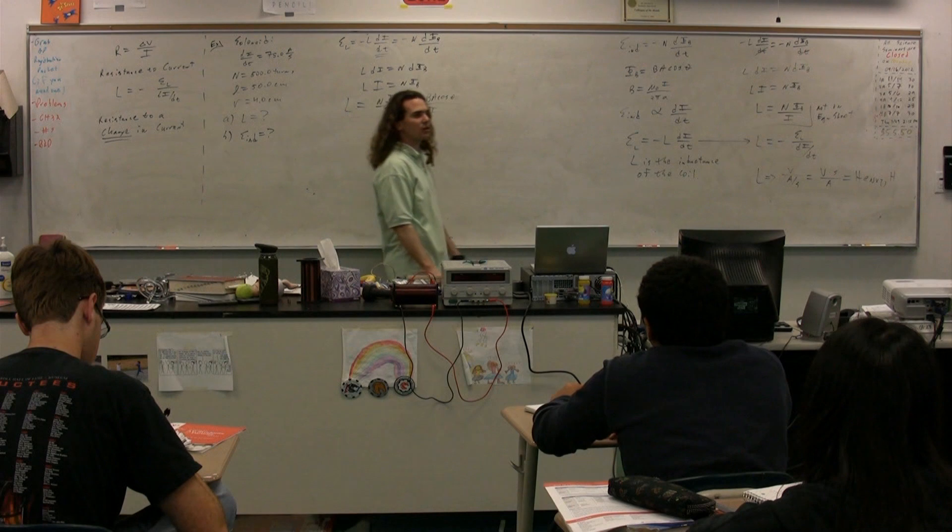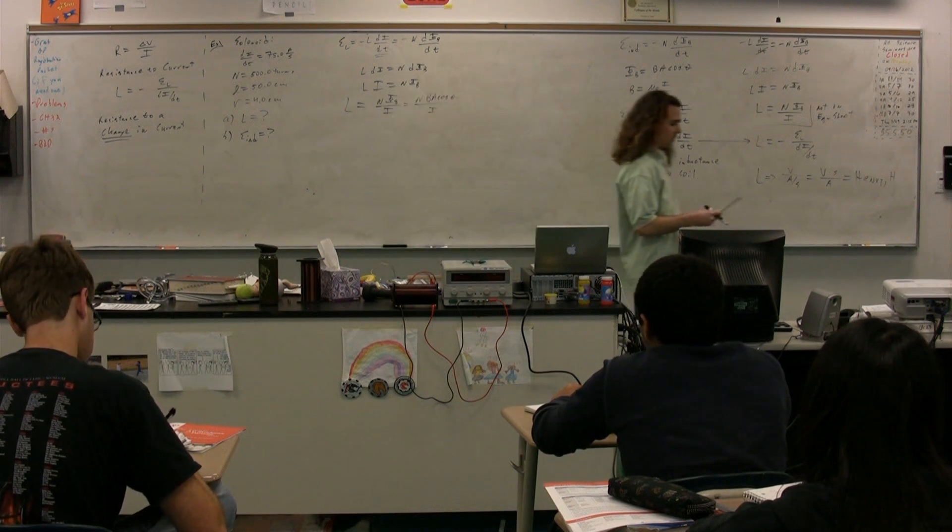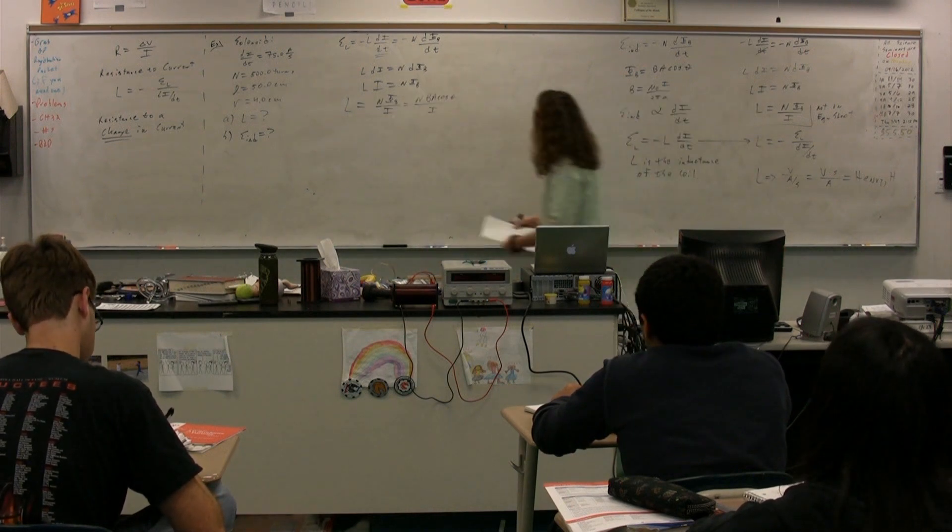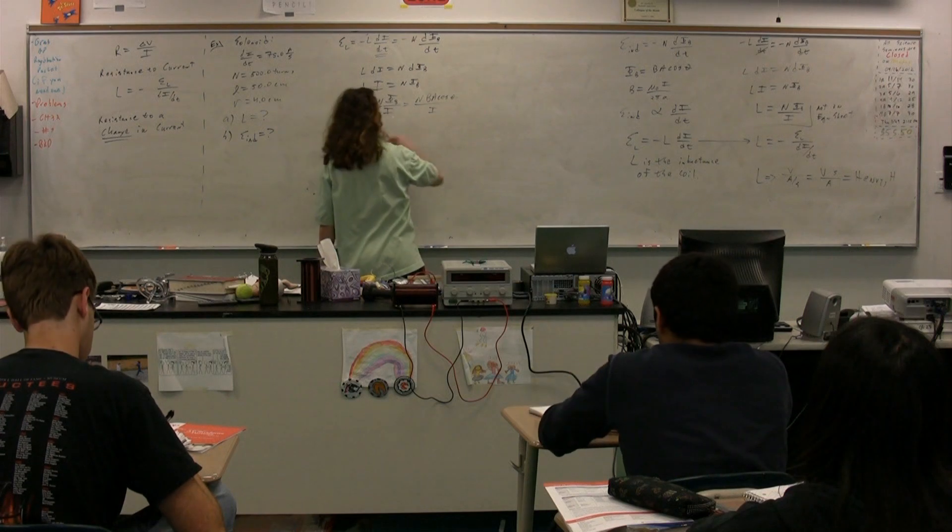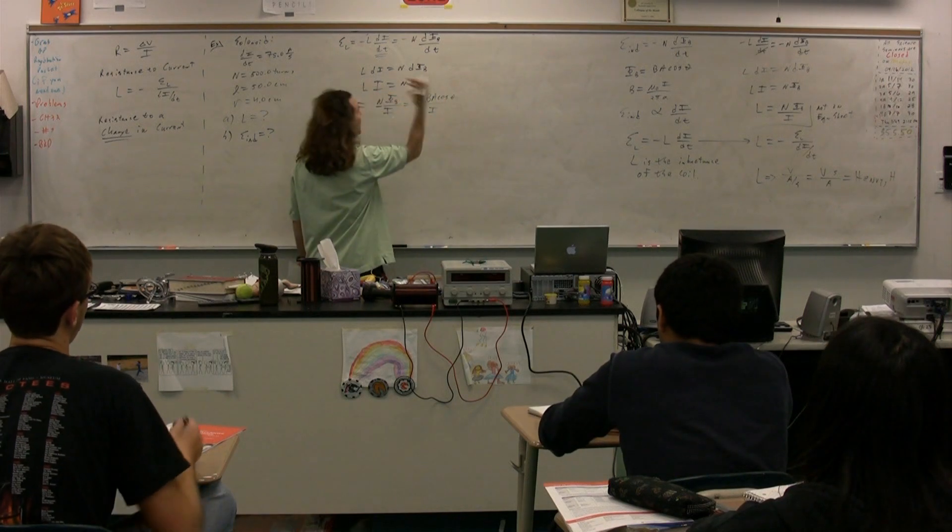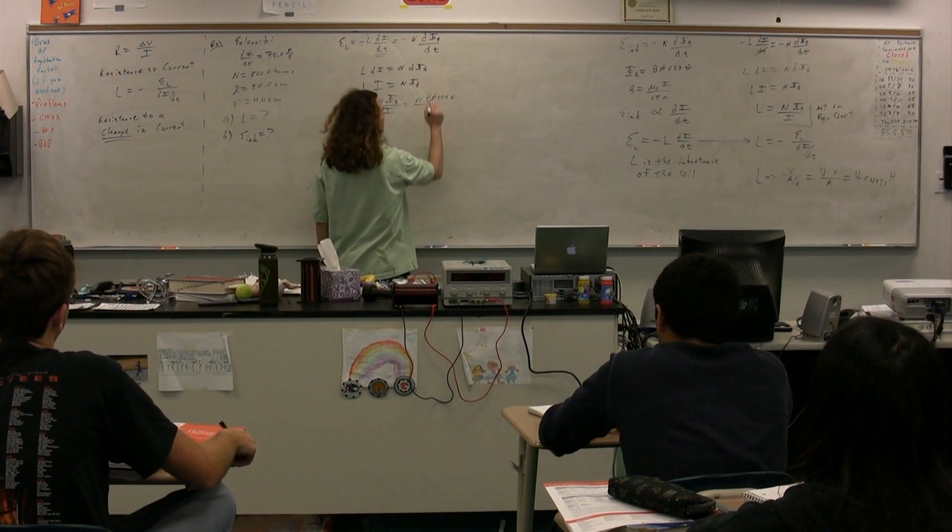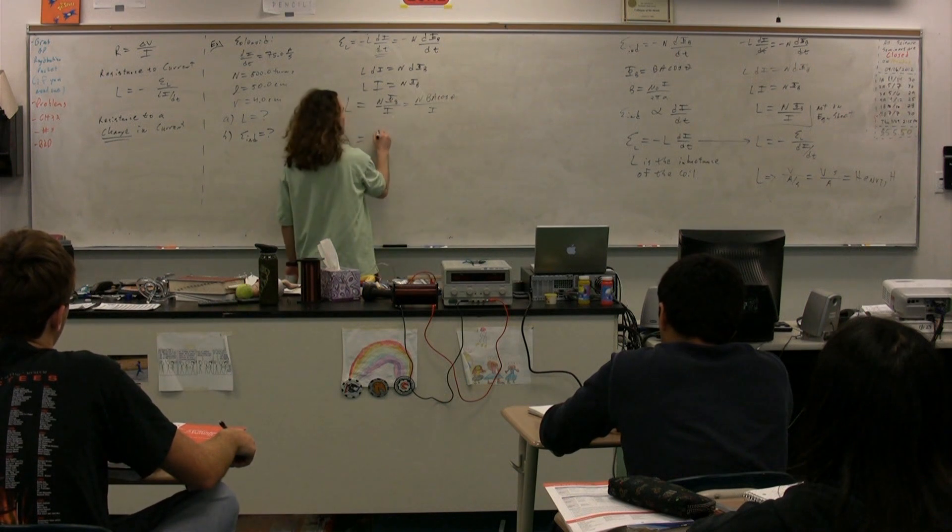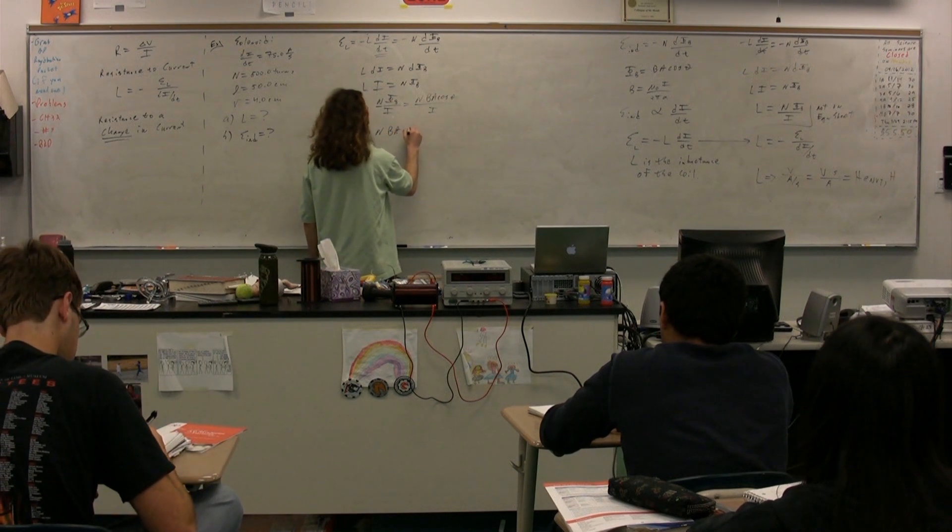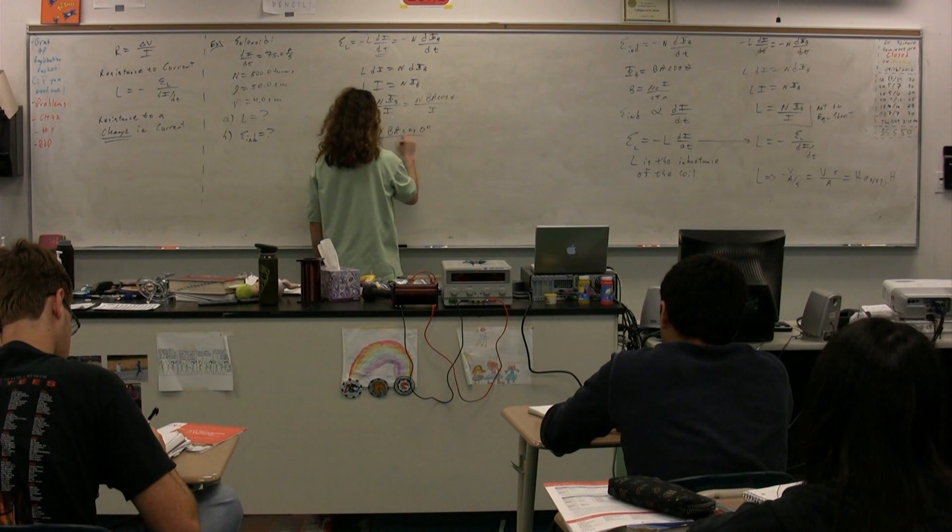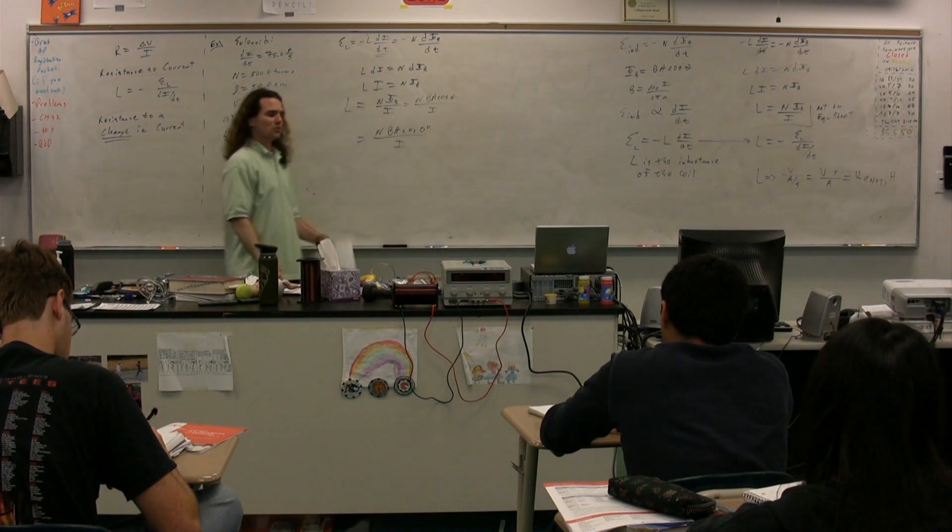B, A, cosine theta. Alright, divided by the current. In this particular case, the Henry's is going to be positive, so we're going to have the cosine of the angle between the magnetic field and the area vector, which is just going to be zero. So n, B, A times the cosine of zero degrees divided by the current. This is a solenoid.